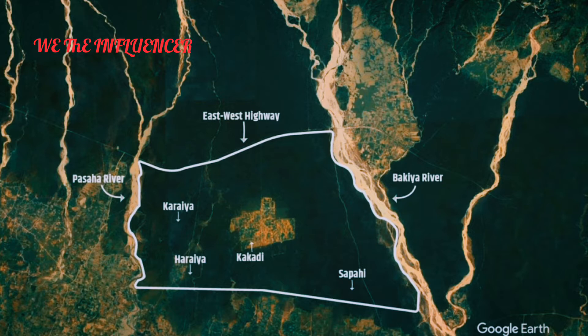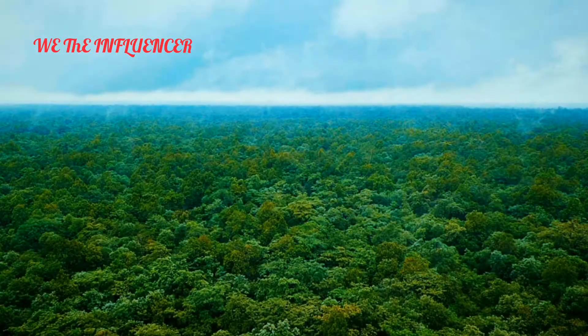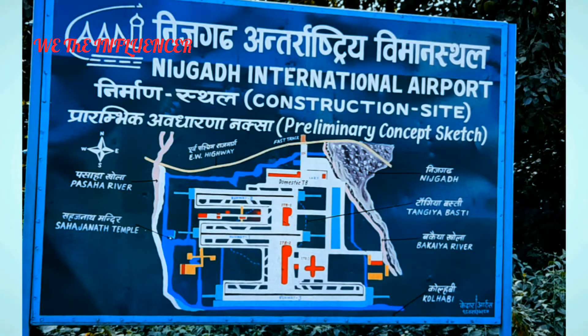After a feasibility study done by the LMW company and input from national as well as international experts, it has been concluded that Nijgaard is an excellent place to construct an airport as an alternative to TIA. Nijgaard International Airport is planned to be the largest in South Asia and the fourth largest in the world in terms of land area, covering 8,045 hectares when completed.